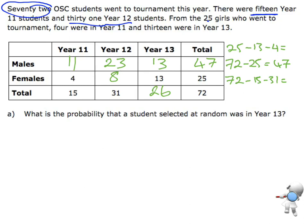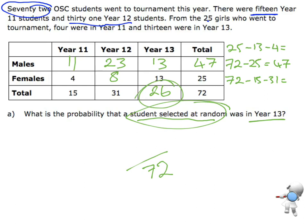Now that the table is complete, I'll look at the actual questions. What is the probability that a student selected at random was in Year 13? Because it says a student selected at random, that means out of every student that went on tournament — so it's out of the 72 students in total. What's the chance that they were in Year 13?